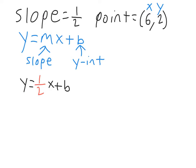So if we plug in our x and y: instead of y we're going to plug in 2. That gives us 2 equals 1/2 — now instead of x we're going to write 6, and put it in parentheses just to show that it's 1/2 times 6 — and then leave the plus b. So first we plugged in our slope, then we plugged in our two points. Now we can just do this problem out and solve for b. First, what's 1/2 times 6? Well, 1/2 times 6 is 3. So that's going to give us 2 equals 3 plus b.